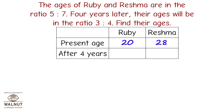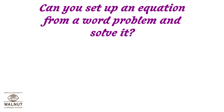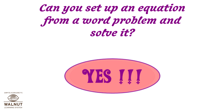After 4 years, Ruby's age will be 24 and Reshma's age will be 32. Let us check the answer: Ruby's age to Reshma's age equals 24 is to 32, which equals 3 is to 4. Can you set up an equation from a word problem and solve it? Yes!